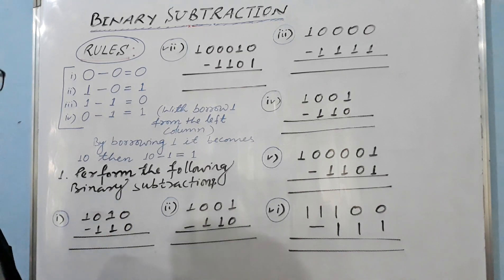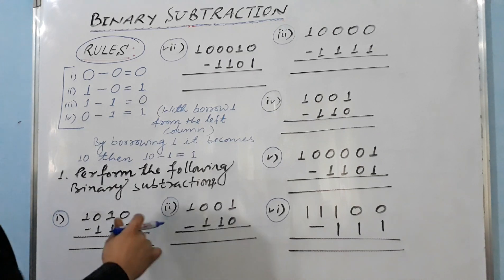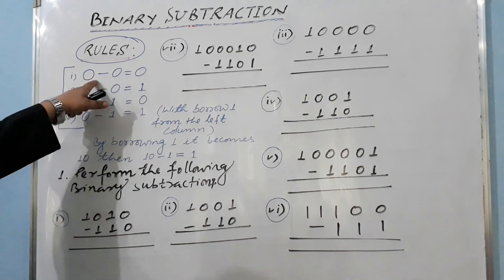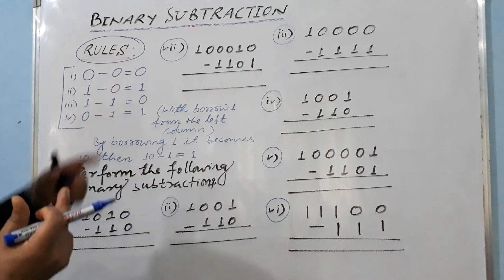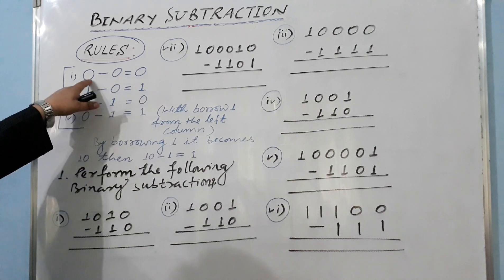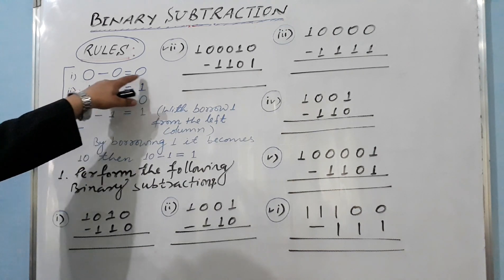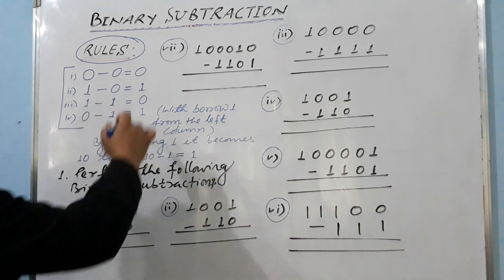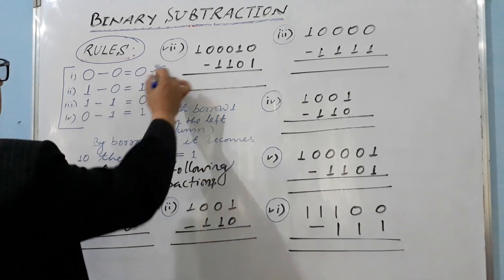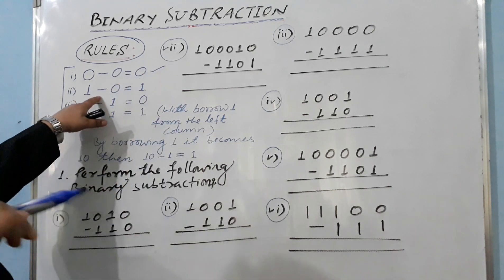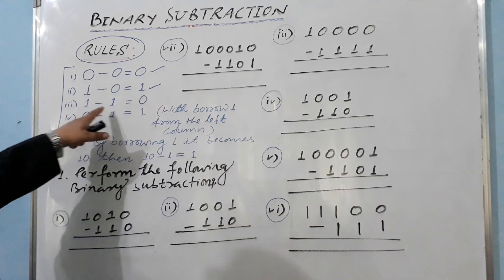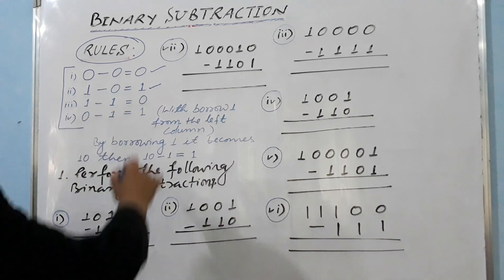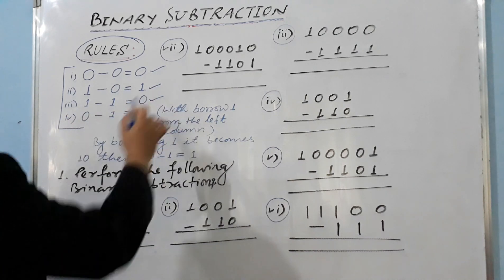If you want to know the subtraction of binary numbers: Rule 1 — zero minus zero equals zero. Rule 2 — one minus zero equals one. Rule 3 — one minus one equals zero.